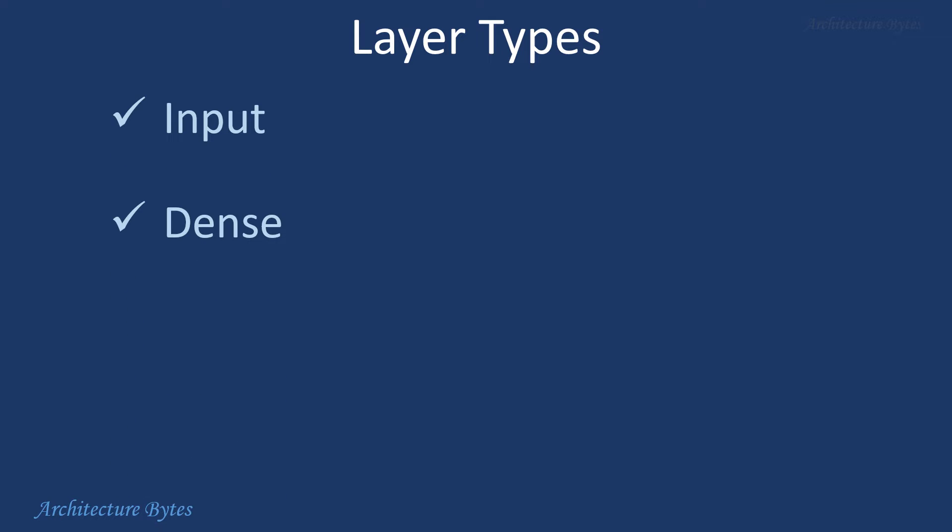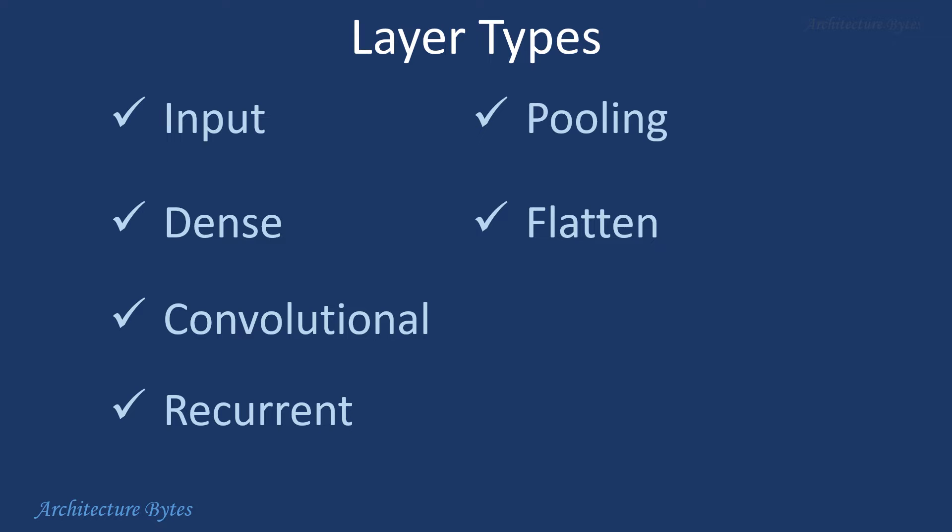Layers can be of various types like input, dense, convolutional, recurrent, pooling, flatten, batch normalization and so on. The choice of layer type used in a neural network and its configuration depends on the specific problem being addressed.